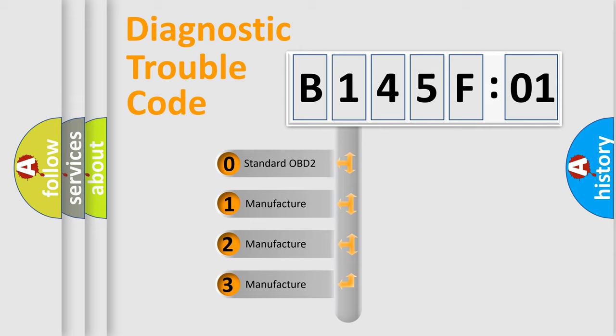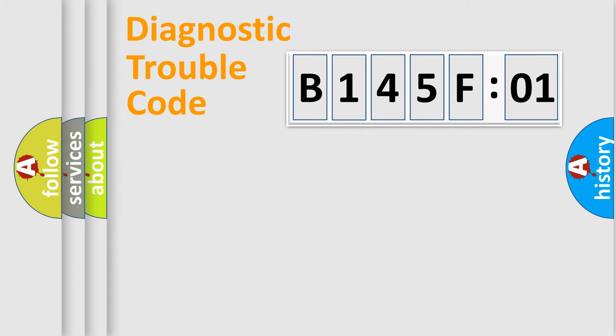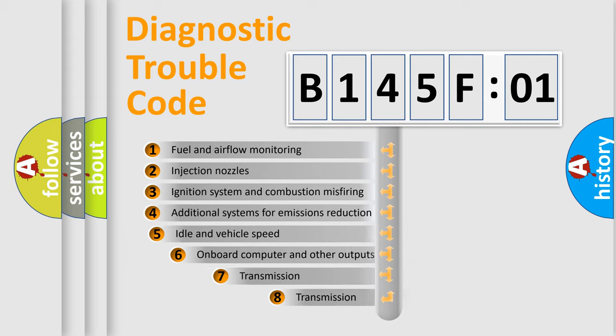If the second character is expressed as zero, it is a standardized error. In the case of numbers 1, 2, or 3, it is a more prestigious expression of the car-specific error.